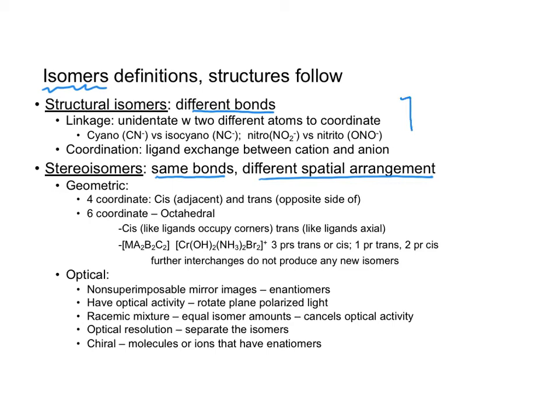Let's start first with the structural isomers. Notice there is something called a linkage. That is when you have a unidentate ligand but it has two different bonds, two different atoms that can coordinate to the metal. When I have cyano versus isocyanato, I can coordinate either through the carbon or the nitrogen. On the next slide, you'll see the nitro versus the nitrito. We also have something called a coordination isomer. That's where the ligands are going to exchange between their positions in the cation and the anion slot.